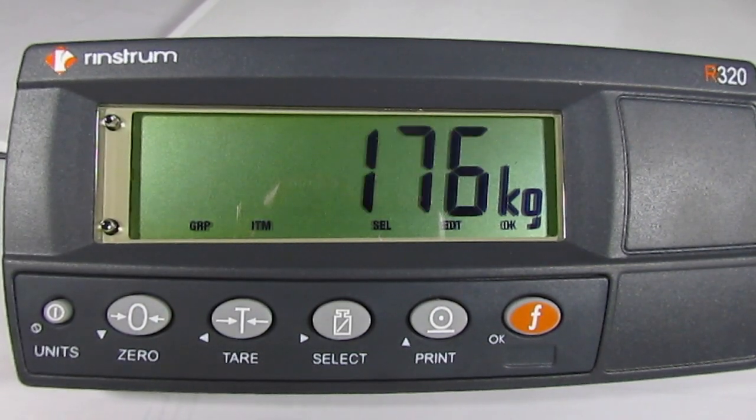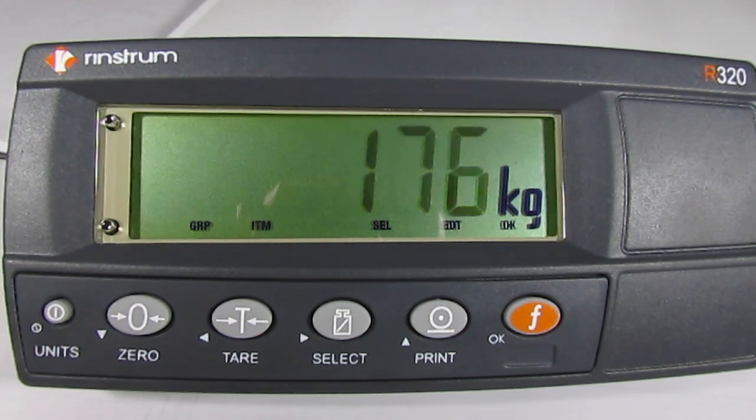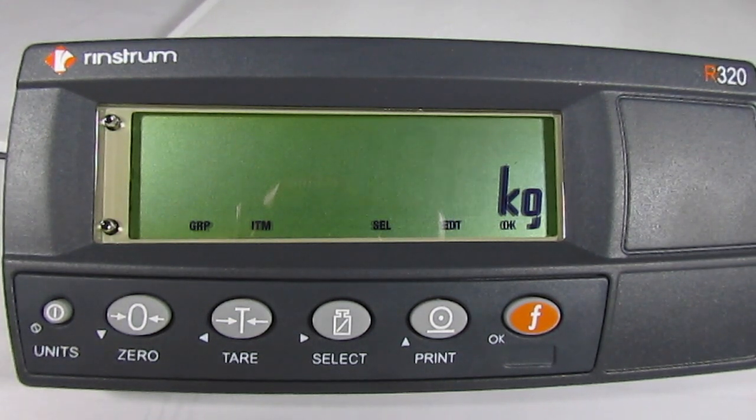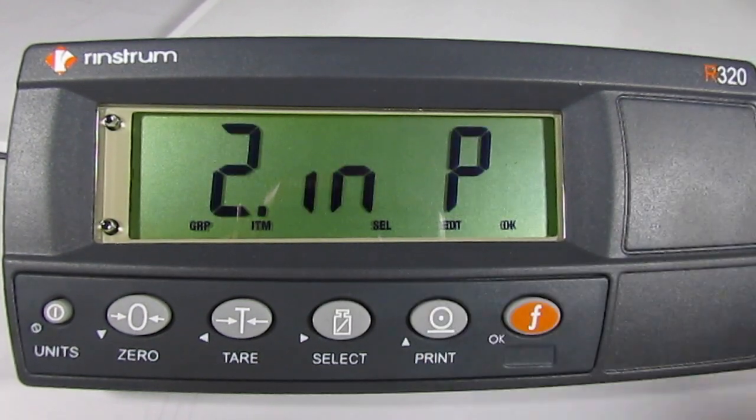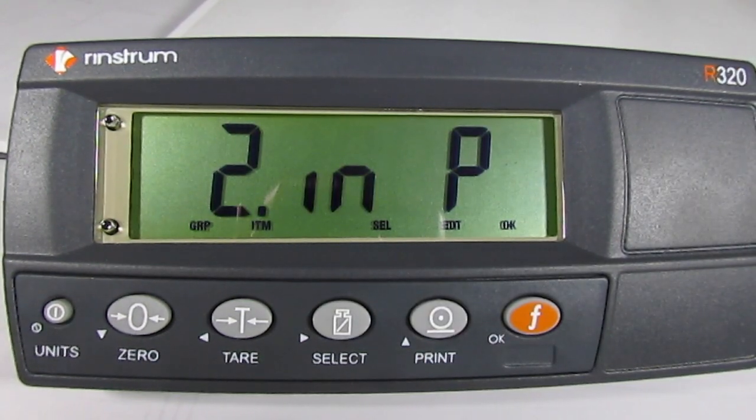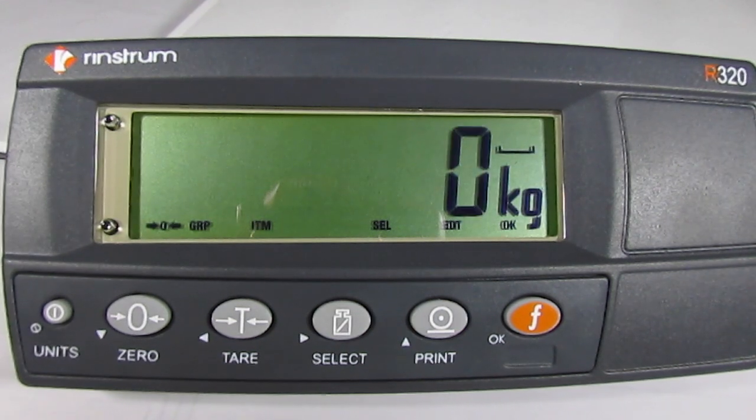The indicator will show the live load, one seven six. To capture zero, we will press the print key, Z and P. The live load is being shown, it is now zero.